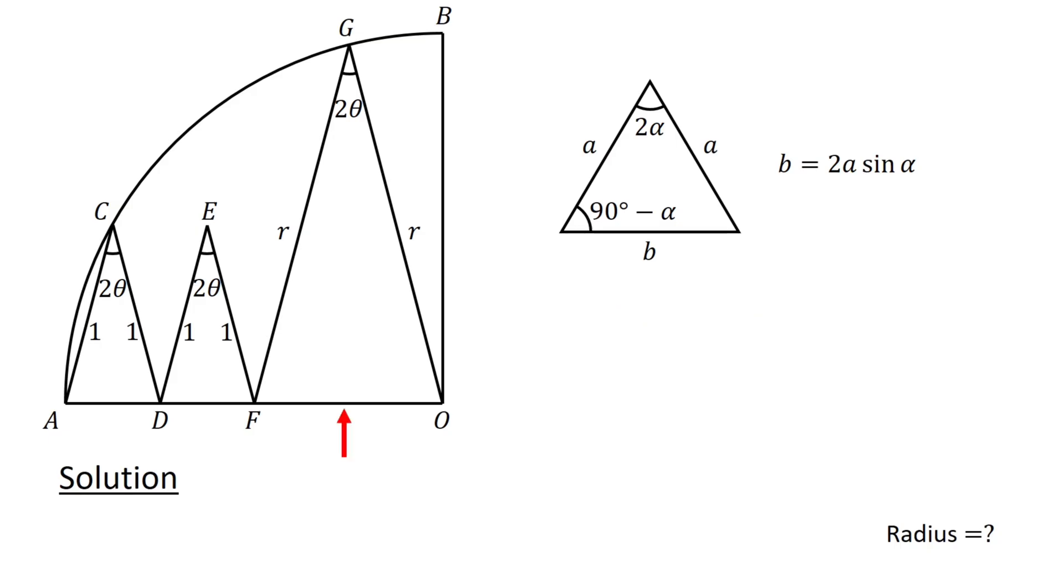So, applying this to triangle FOG gives us 2 R sin theta, while for the two smaller triangles, we obtain 2 sin theta for the bases.